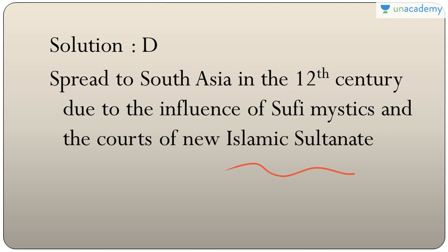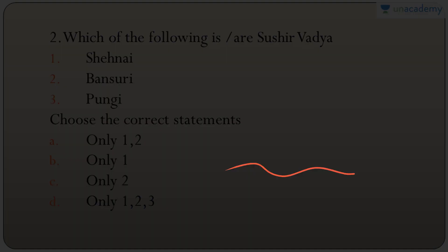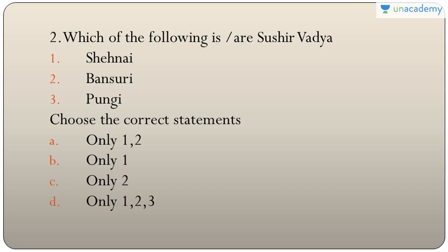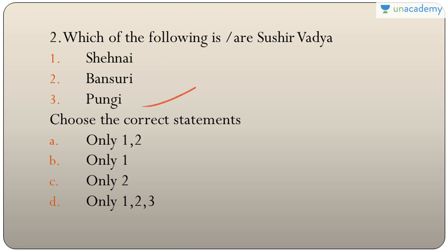Question two: which of the following are Sushir Vadya (wind instruments) — Shahnai, Bansuri, Pungi? All three are wind instruments, so the answer is D — only one, two, and three.